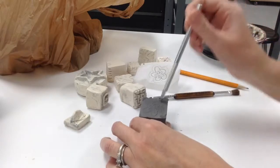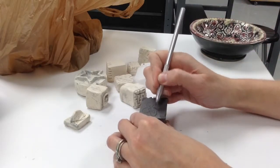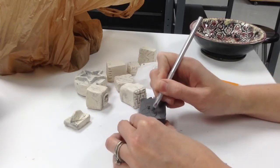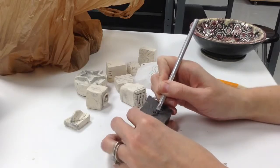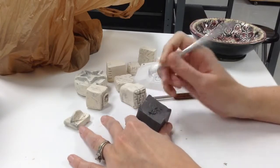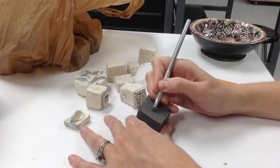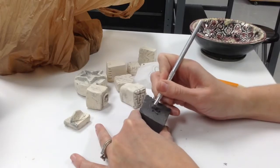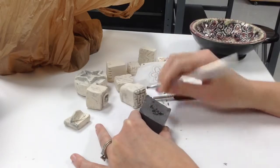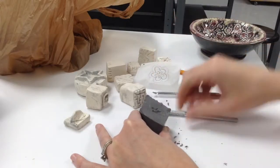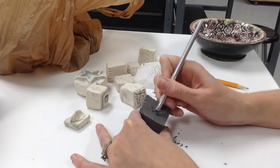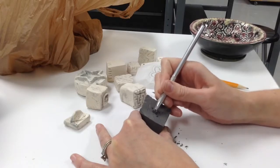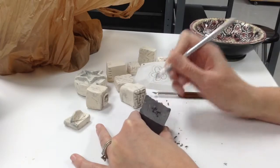So what I'm going to do is take away that middle flower part. This helps if you have one of these little sgraffito brushes to get off the crumbs. And I do want to make it deep enough that the clay actually will go into that area.